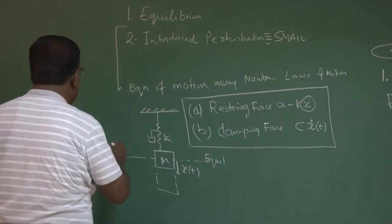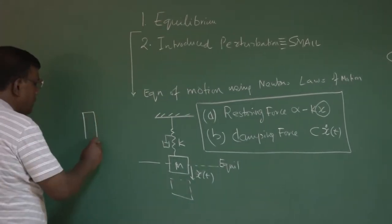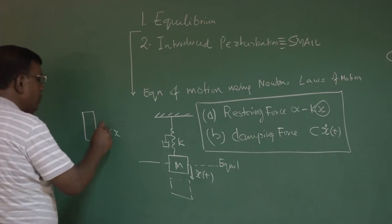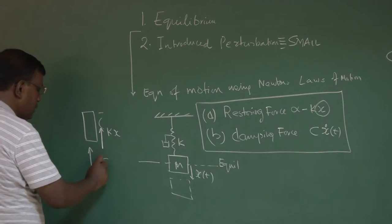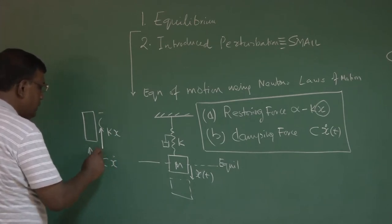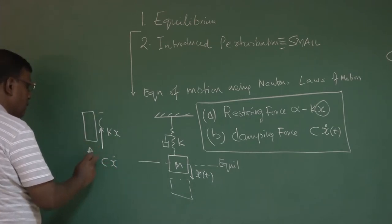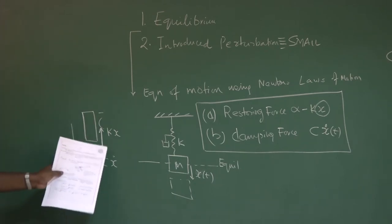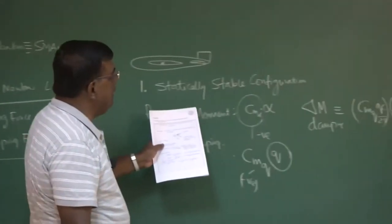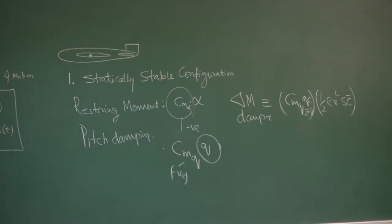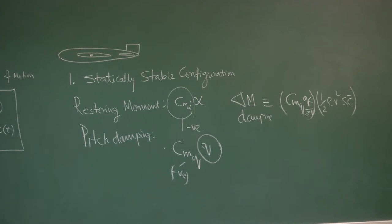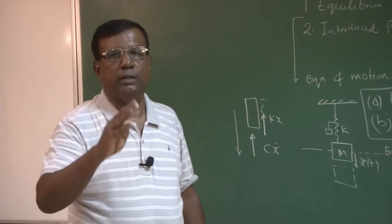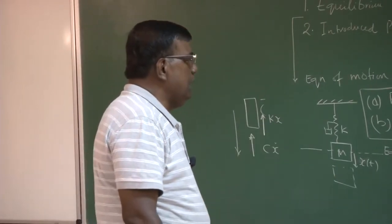For the mass-spring system, remember you model it with minus kx and minus cx-dot — the force acting in the opposite direction of motion disturbance. So this clarity must be in your mind. That is why we try to draw a similarity between the mass-spring-damper system and the angular motion dynamics of an airplane. This was our understanding.